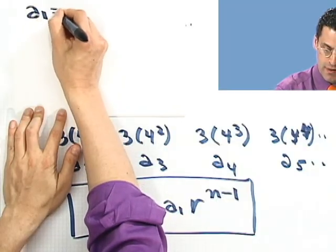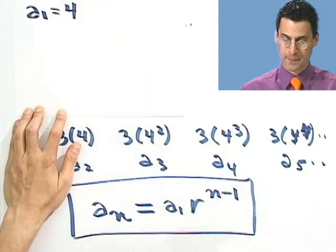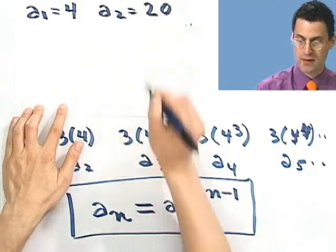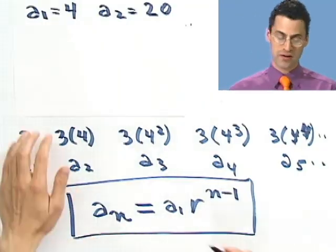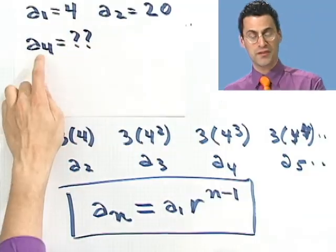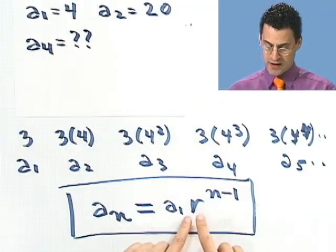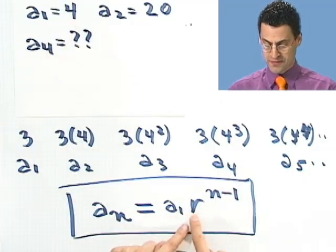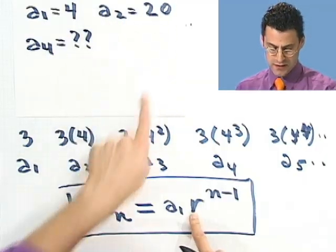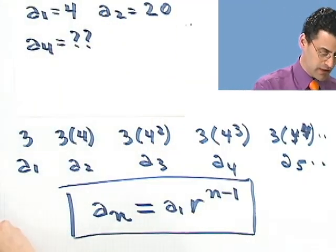For example, suppose that I tell you that I'm thinking of a geometric sequence, its first term equals 4, and its second term equals 20. Can you tell me what the fourth term is going to be? Well, to find the fourth term, I've got to find that ratio, because I already know a1, but I need to find that ratio. How could I do that? Well, if I plug this in to this formula, what would that give me? Well, that would tell me the following.